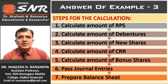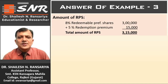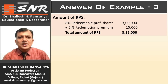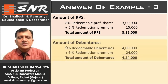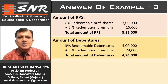First, we will calculate the amount of RPS. So, 8% redeemable preference shares Rs. 3,00,000, plus redemption premium Rs. 15,000. Total amount of RPS: Rs. 3,15,000. Next, amount of debentures: debenture value Rs. 4,00,000, plus redemption premium Rs. 24,000. So, total amount of debentures: Rs. 4,24,000.